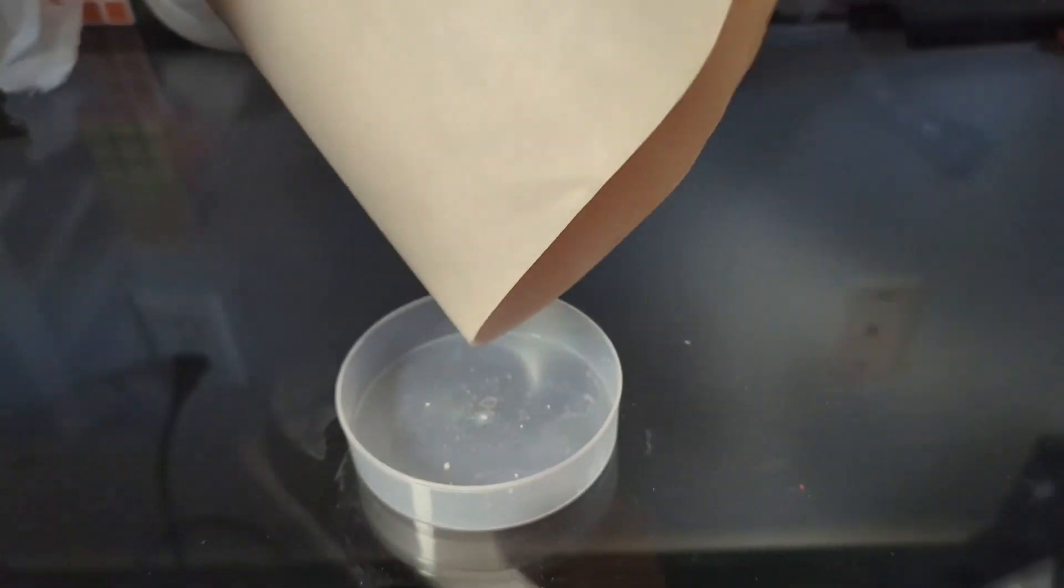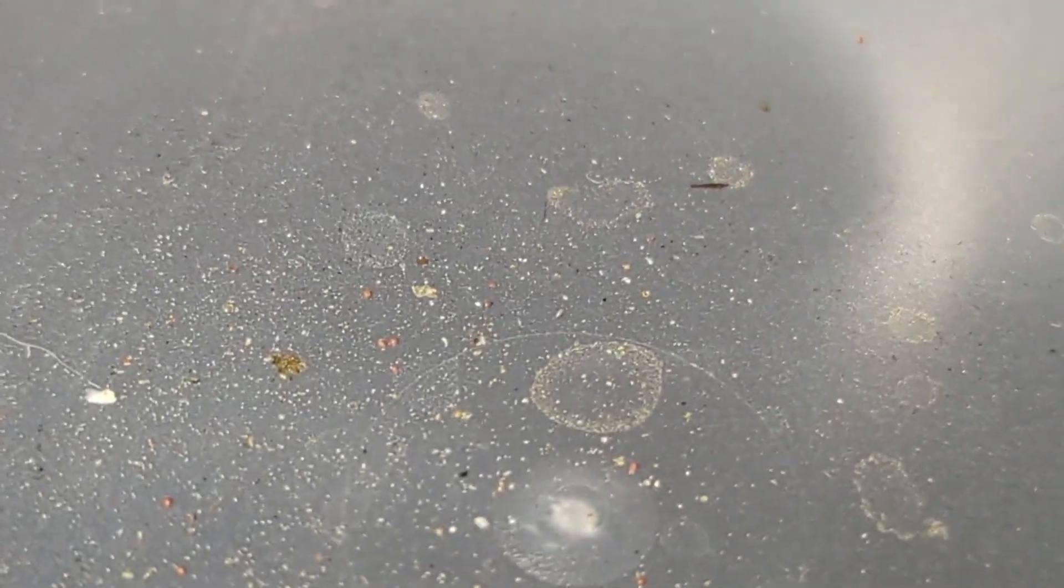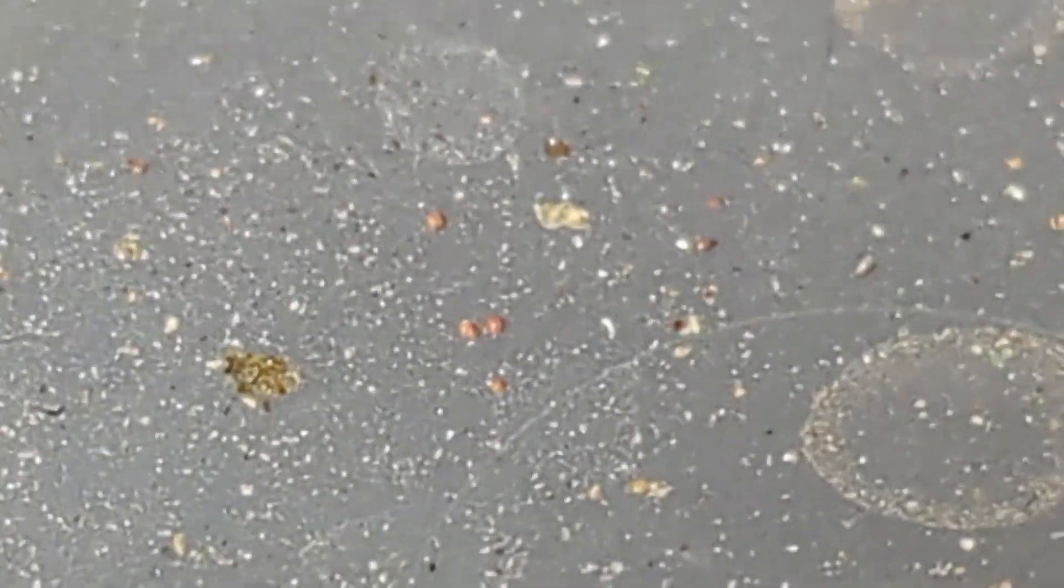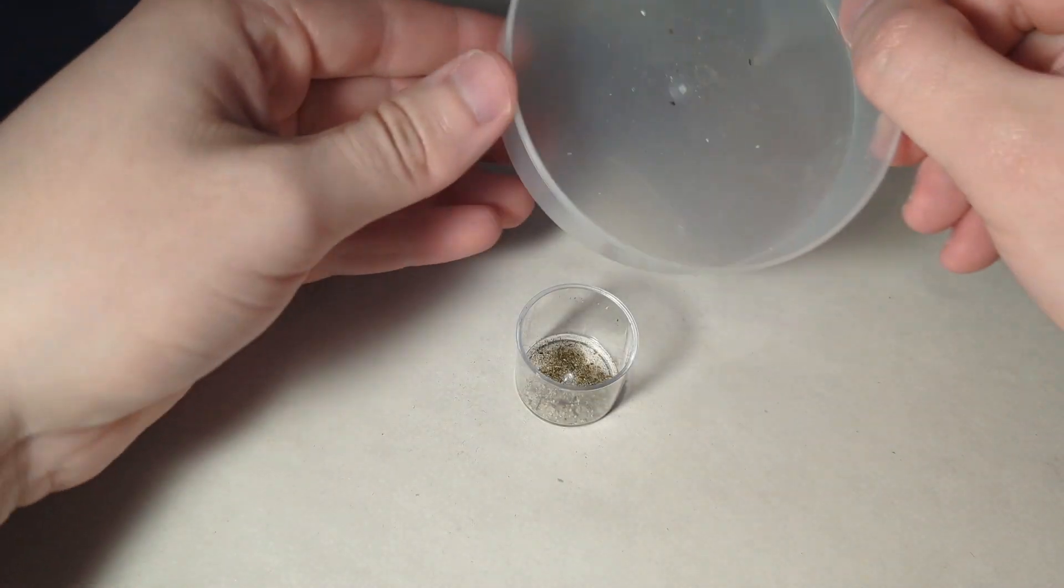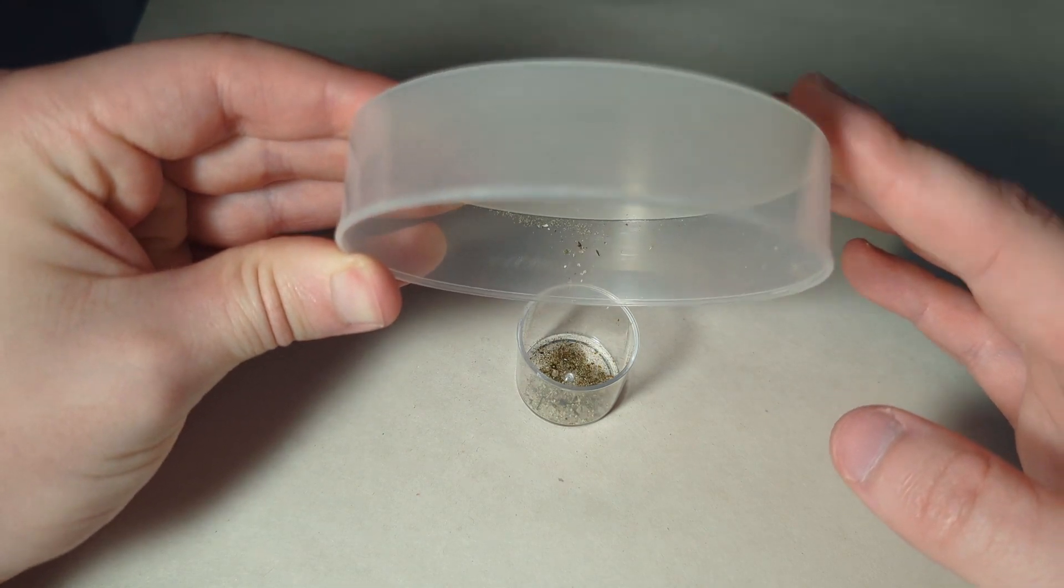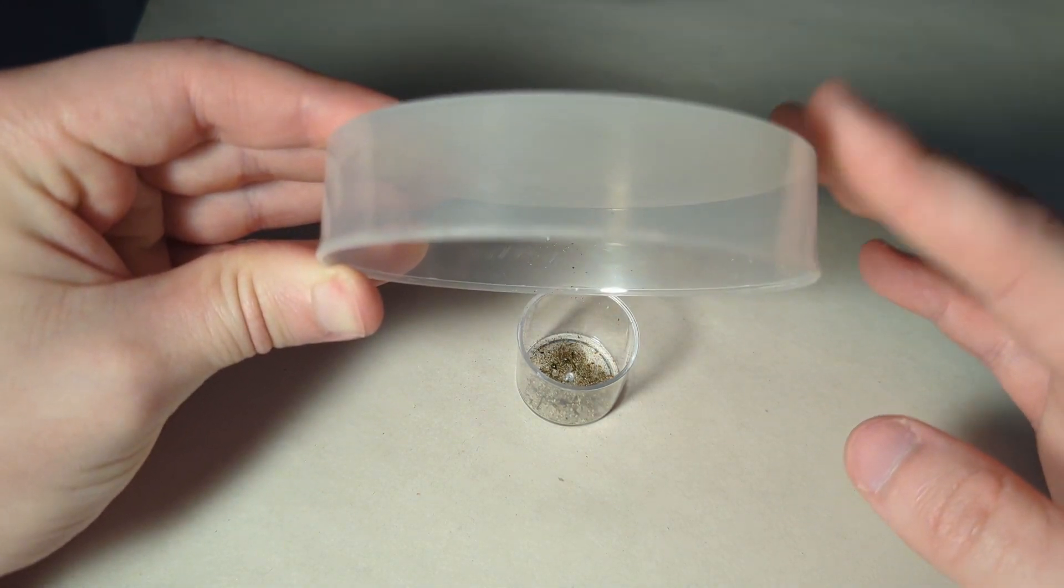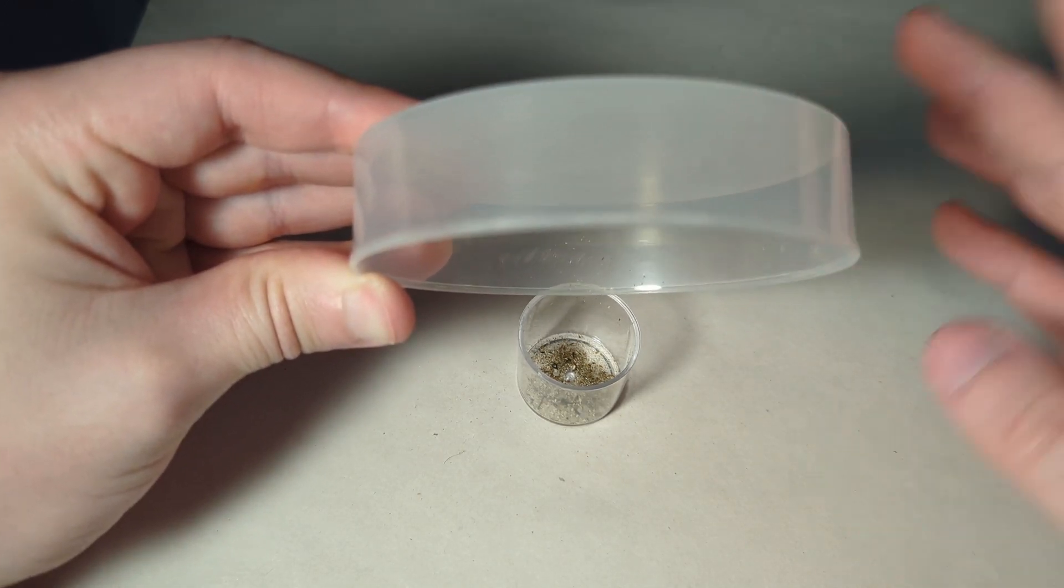Once you're done, make sure to empty all the additional residue that was on the paper into a small container because, as you can see, there are some eggs that escape so you're going to want to keep these. I just dump these with the other dirt and debris particles that we collected earlier, and this is what I use to start my next tank. I pretty much always do this so I don't have to subtract from any of my egg storage.